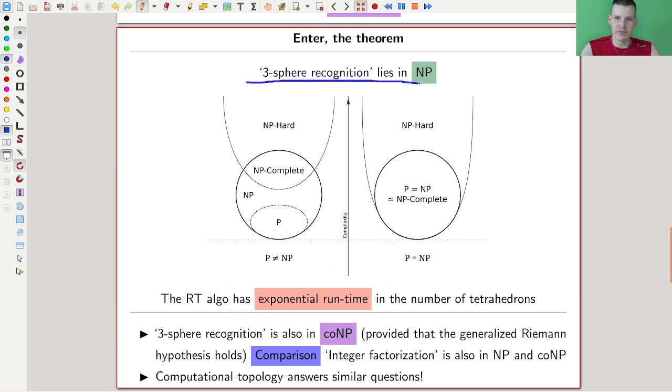In this example, sphere recognition—the three-sphere recognition—was later proven, much later than the Poincaré conjecture, to be in the complexity class NP, which is a certain type of complexity class which is reasonably complicated, and actually also in coNP. For comparison, integer factorization is the same type—also in NP and in coNP. The algorithm itself that you can run is actually not that great in some sense. It has exponential runtime in the number of tetrahedrons, which is not that great.